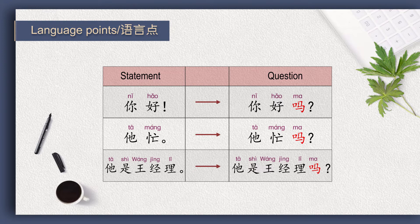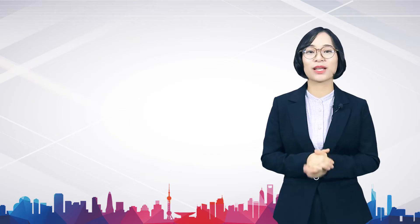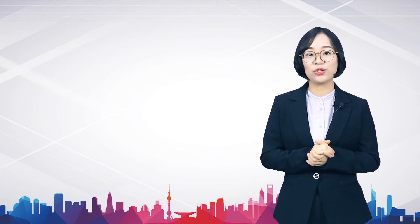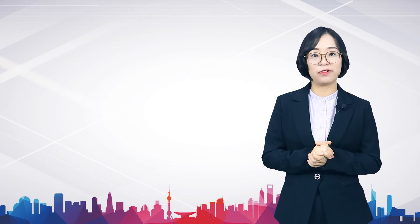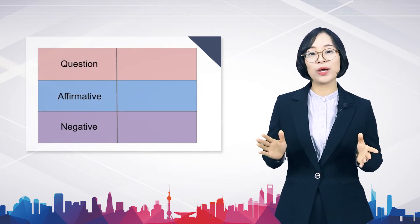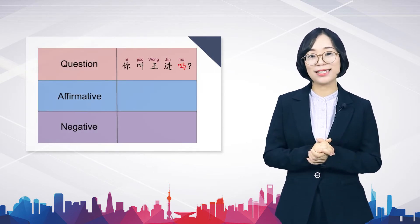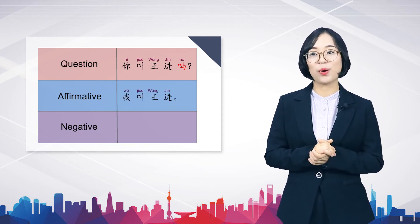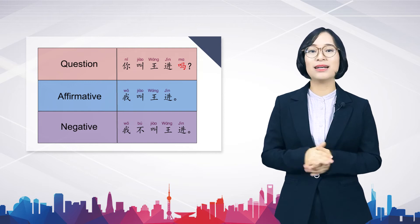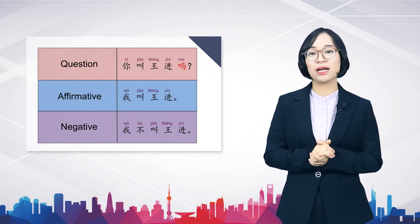To answer the question by the negative, drop the 吗 and insert a negative adverb, usually 不, before the verb or adjective. To answer by the affirmative, drop the 吗 at the end. For example, for the question 你叫王经吗? The affirmative is 我叫王经, and the negative is 我不叫王经. Now please tell me the interactive, affirmative, or negative form of the following sentences.